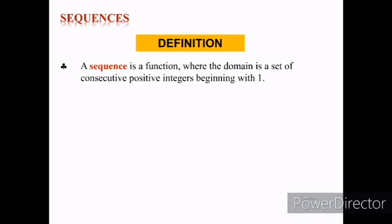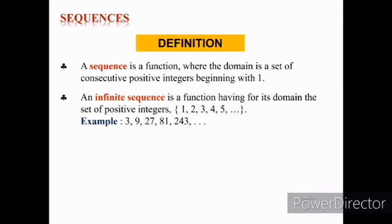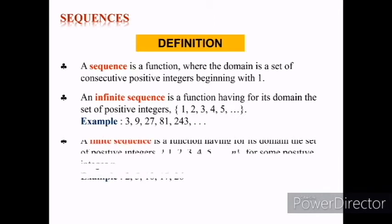A sequence is a function where the domain is a set of consecutive positive integers beginning with 1. An infinite sequence is a function having for its domain the set of positive integers 1, 2, 3, 4, 5, and so on. For example: 3, 9, 27, 81, 200, 43, and so on.